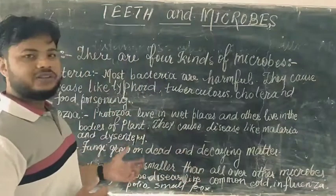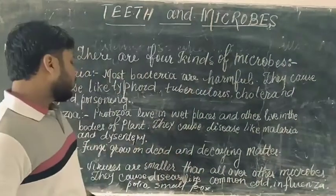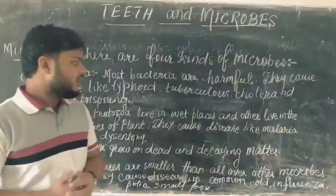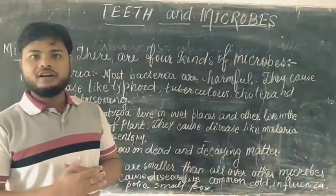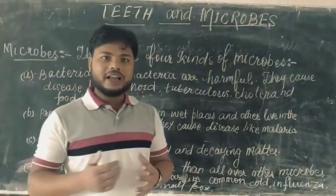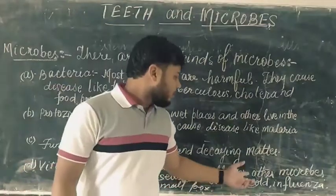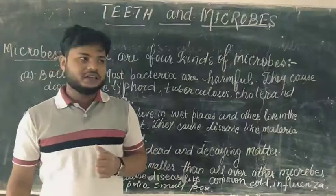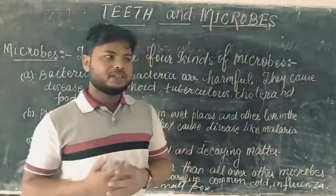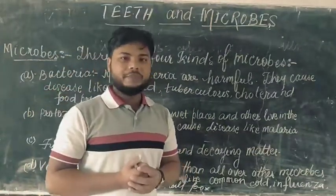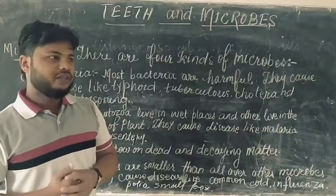Examples of communicable diseases include the common cold, influenza, and smallpox — these spread from one person to another. If a sick person comes in contact with a healthy person, that healthy person may also suffer from the same disease.